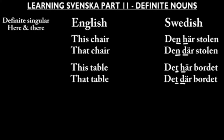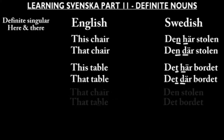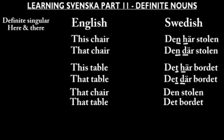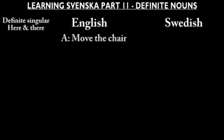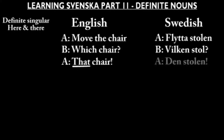One can omit här or där to get something that perhaps best resembles the structure of English: den stolen, det bordet. This is however used to denote a very specific item and it's not completely equivalent to 'the chair' or 'the table'. For example: 'Move the chair.' 'Which chair?' 'That chair.' Flytta stolen. Vilken stol? Den stolen. Usually this would be accompanied by body language for clarity.